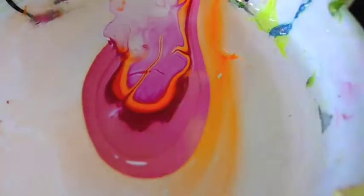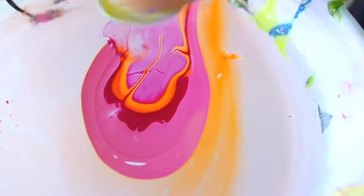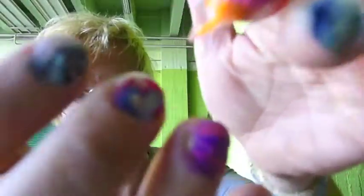This is to avoid getting too much nail polish on your hand and finger. Now you can put your finger in the water, nail facing down, like this. Then use your toothpick to remove all the polish off the water surface, and that's it.